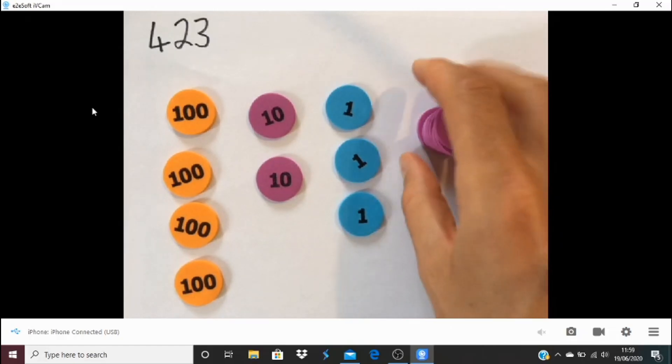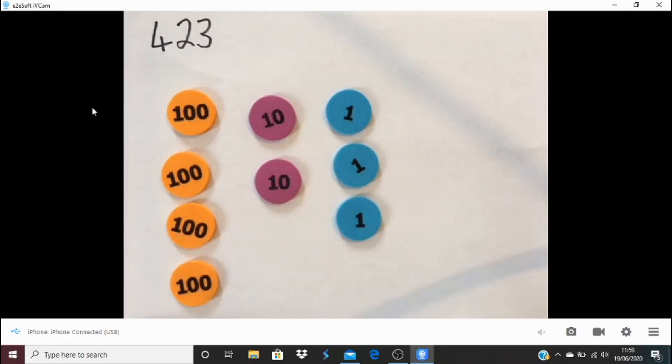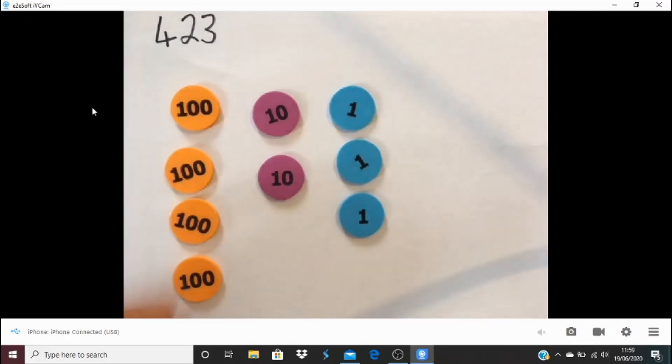Now, one of the questions asked, what's the fewest coins you can use to make 423? Well, this is the fewest coins that I could use. So 4, 6, 9 coins there.